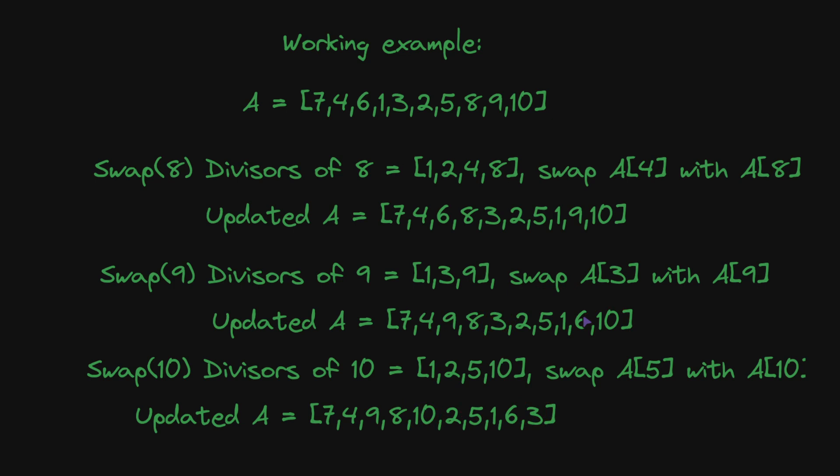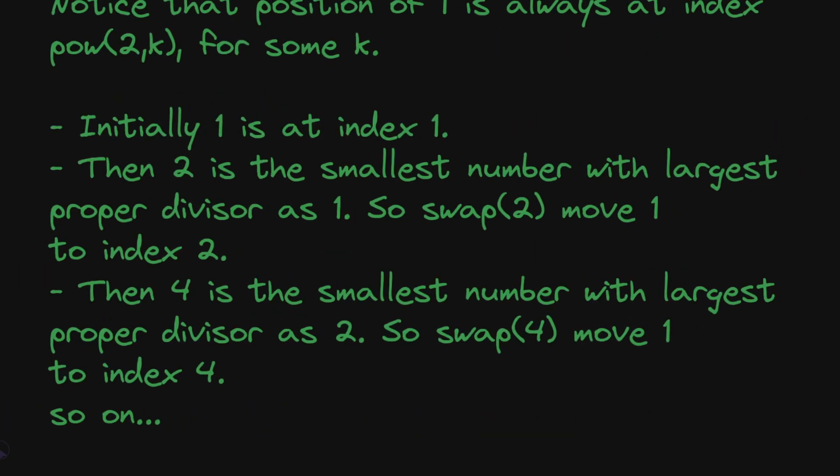So far you would have noticed the places where 1 was: at index 1, then index 2, then index 4, and now at index 8. The next number where 8 would be the smallest divisor would be 16. Now a bold claim: Notice that the position of 1 is always at index 2 to the power k for some k.